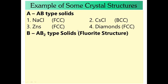AB2 type solid is the fluoride structure. In AB2 structure, A is the cation and B is the anion. In fluoride structure, normally anions should be spheres and cations should be voids. But this AB2 is one special structure where A is cation and sphere, and B is anion and void.